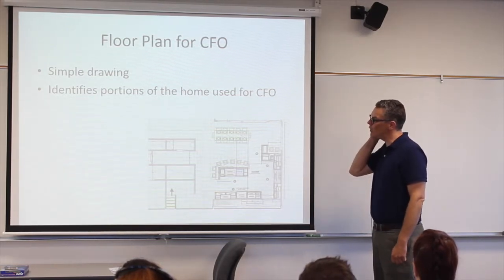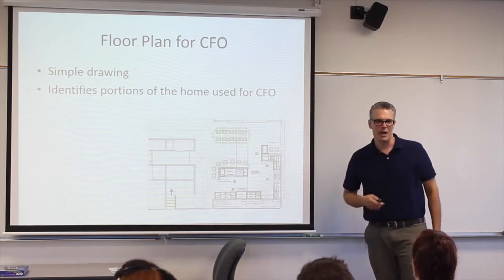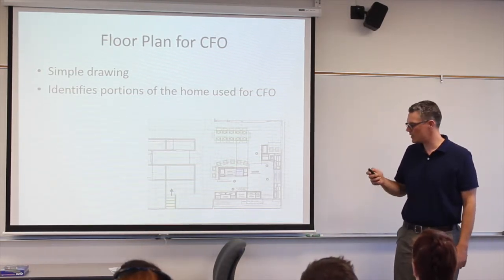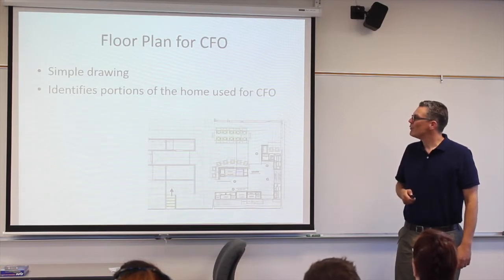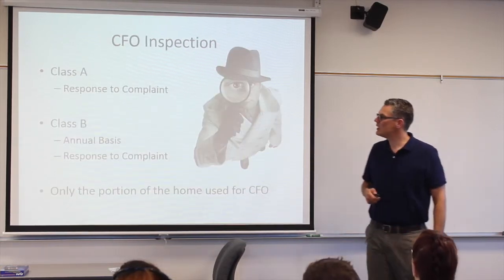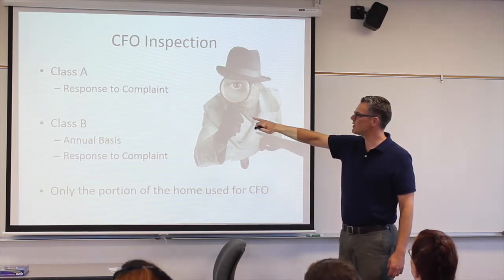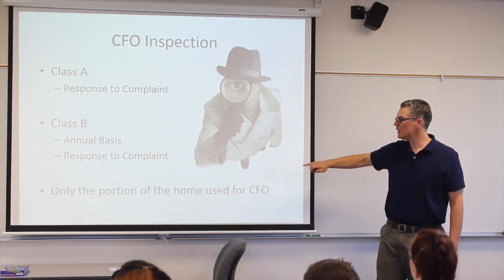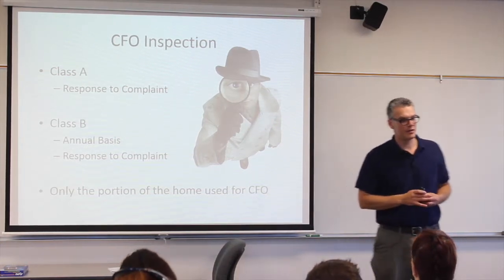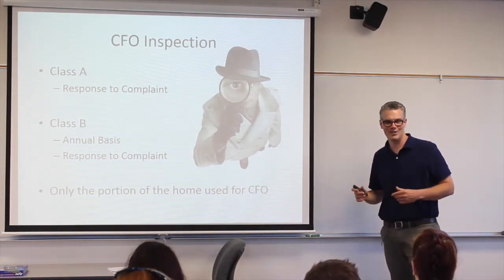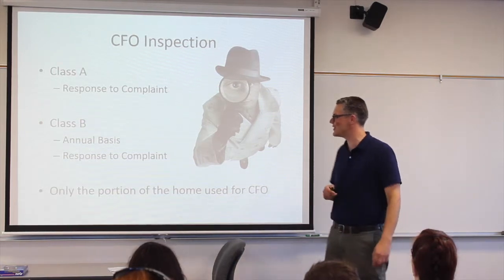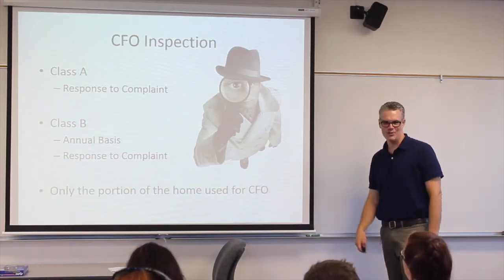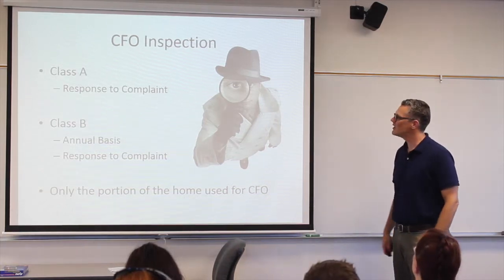It's our way of seeing that you've thought about this — where are you going to store these things, where are you going to put your finished product? The inspection: Class A is only done in response to a complaint. Class B is on an annual basis and in response to complaint. We're only inspecting the portions of your home that are used for the cottage food operation, so we're not going through your whole place. We just want to look at how the food is being made and whether this is going to work in your kitchen.